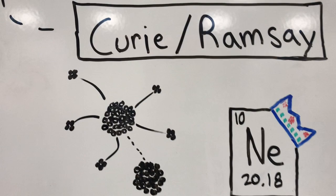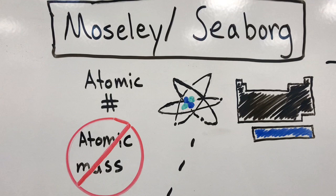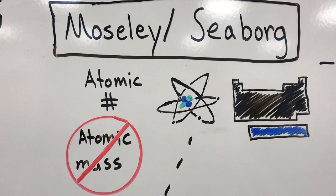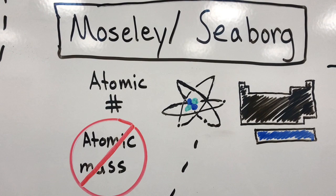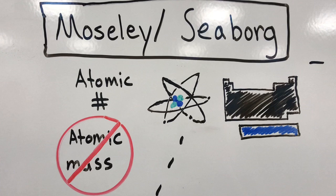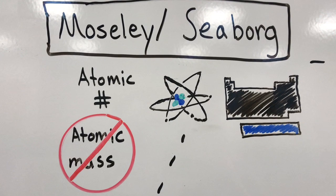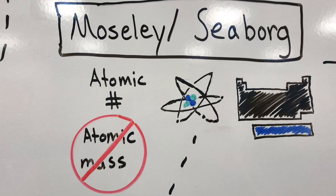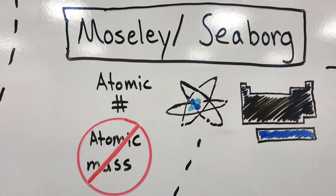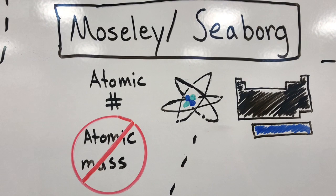Following Curie and Ramsay, scientists like Moseley and Seaborg further altered the table. Moseley, with the discovery of the electron, noticed that it was atomic number, not atomic mass, that played a larger role in the fundamental similarities of the elements, and so he ordered the elements by their atomic number, not their atomic mass. Seaborg gave us the elements which are normally placed underneath the table — the lanthanides and actinides. These are considered to be part of the transition metals, but because of space, they are placed underneath the table.